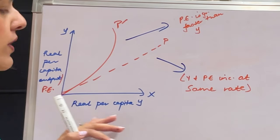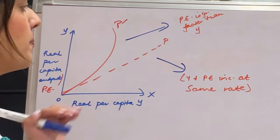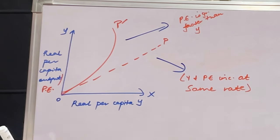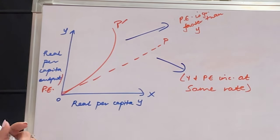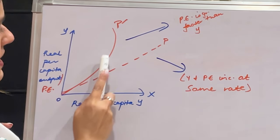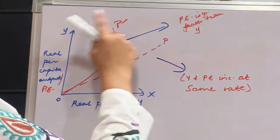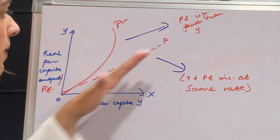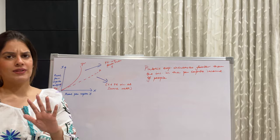On the x-axis we have real per capita income and on the y-axis we have real per capita public expenditure. Initially, look at the dotted red line P — both income and public expenditure rise at the same rate, like a supply curve going upward. But after a certain point, public expenditure starts growing faster than income, causing the curve to bend. It takes the shape of a curve rather than a straight line, because PE is growing faster than per capita income.